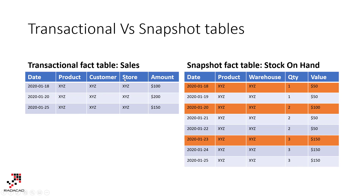The snapshot fact table is a little bit different from a transactional fact table. A transactional fact table, like the sales fact table, is a table where you have a record when an action happens — for example, a sales transaction on the 18th of January 2020 for a product. If there is no action on the 19th, there is no record — no sales, no transaction.